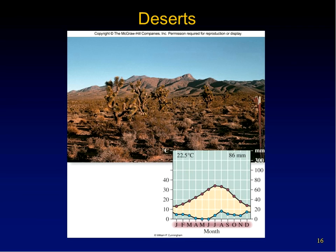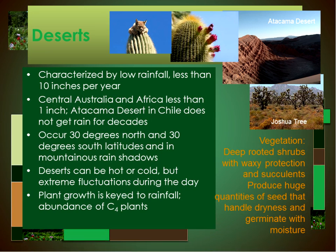Deserts generally receive very small amounts of precipitation per year. Hot deserts, as in the American Southwest, endure year-round drought and extreme heat in the summer. The rainfall is very low, less than 10 inches per year. In some deserts, such as in Central Australia and Africa, less than one inch of rainfall occurs per year. And the Atacama Desert in Chile is famous because it does not get rain for decades.